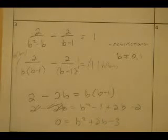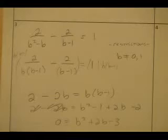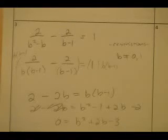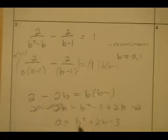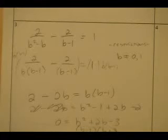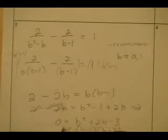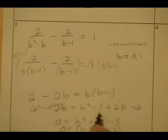I'm almost done. I need two numbers that multiply to negative 3 and add to positive 2 — how about negative 1 and positive 3. So the factored form is (b minus 1)(b plus 3) equals 0.